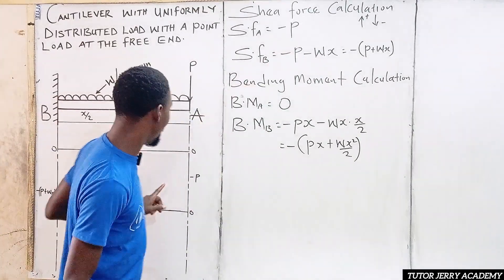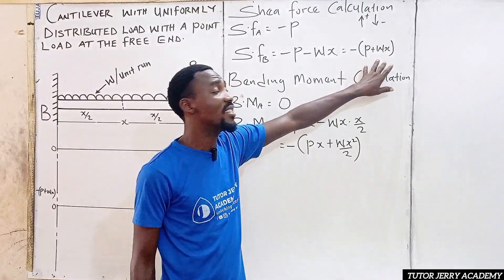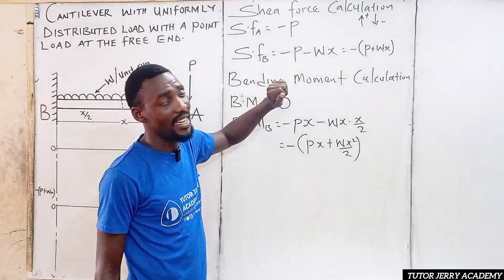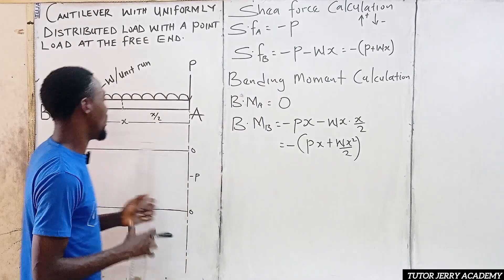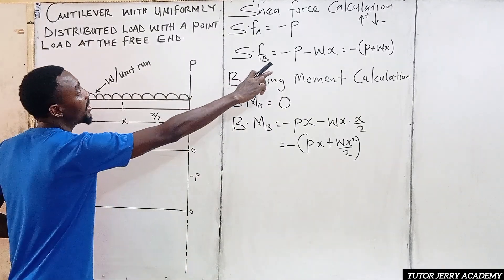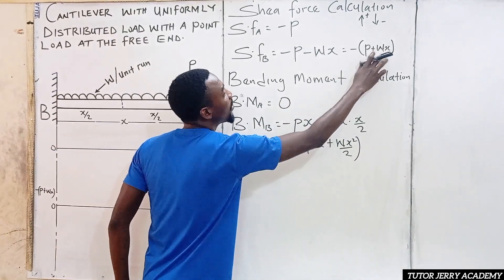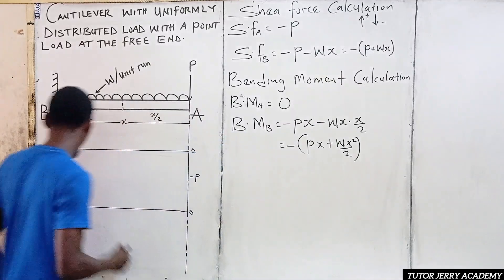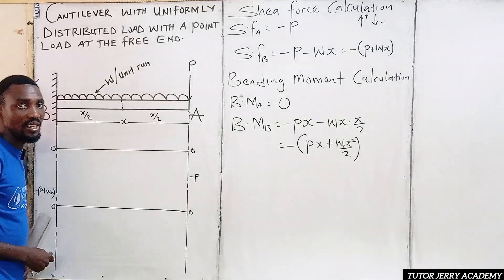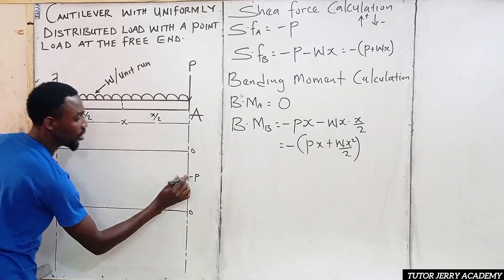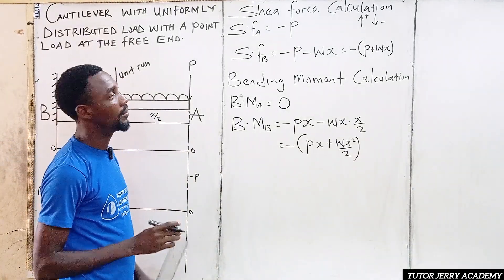At point A we have negative P. At point B we have negative into P plus WS. Since P plus WS is greater than P alone, the value at B is more negative than at A. For example, if negative P is negative 50 and WS is 20, we get negative 70. So point B comes down further than point A on the diagram.